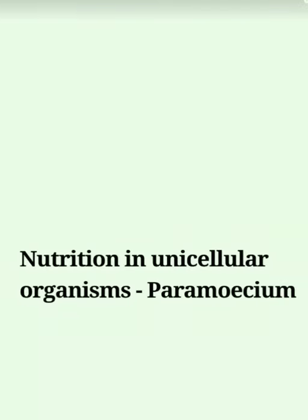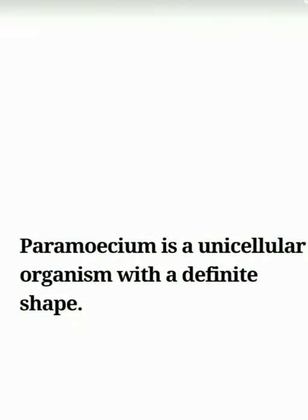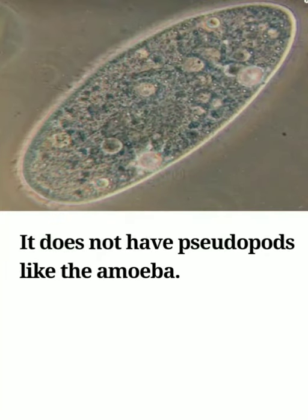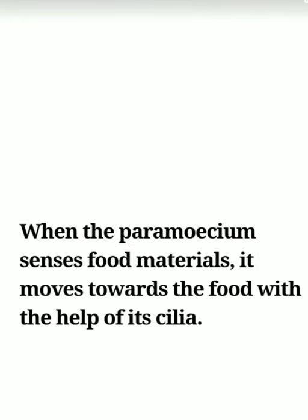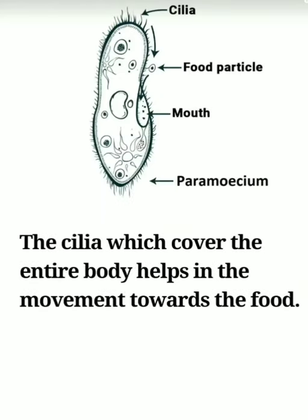Now let us learn about nutrition in another unicellular organism — paramecium. Paramecium is a unicellular organism with a definite shape, unlike amoeba which has no definite shape. Paramecium does not have pseudopods; instead it has a groove-like structure called a mouth, also called the cytostome, through which food is taken. When paramecium senses food, it moves towards it using small hair-like structures called cilia, which cover the entire body and aid in movement.